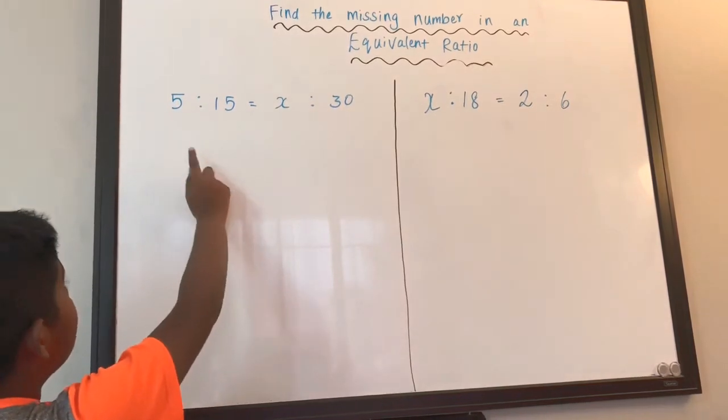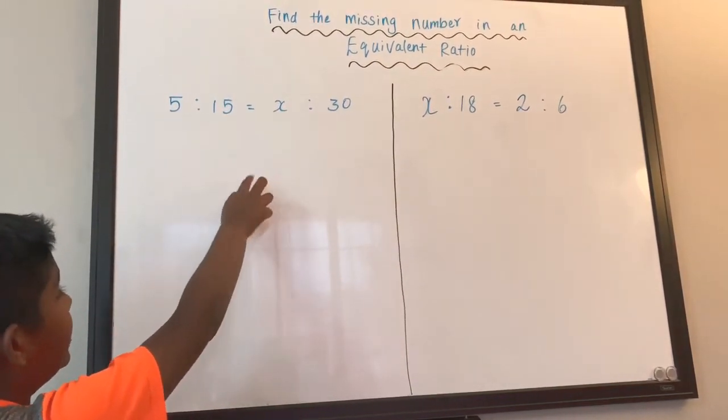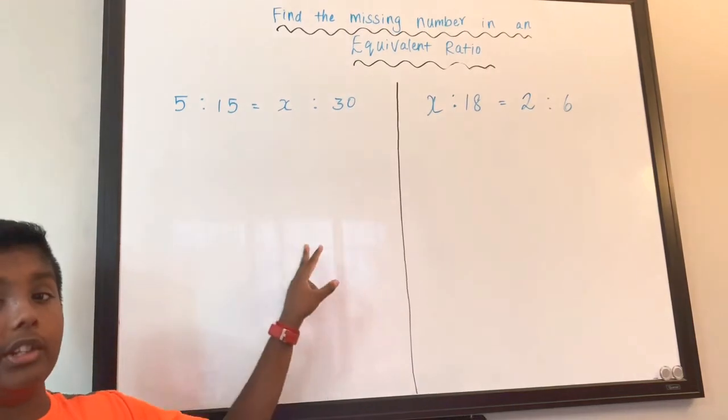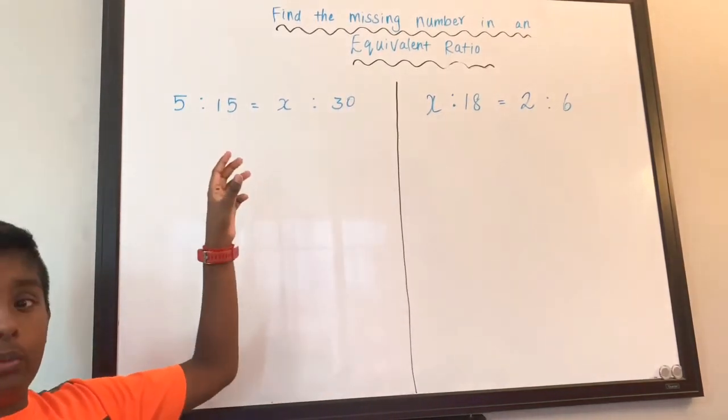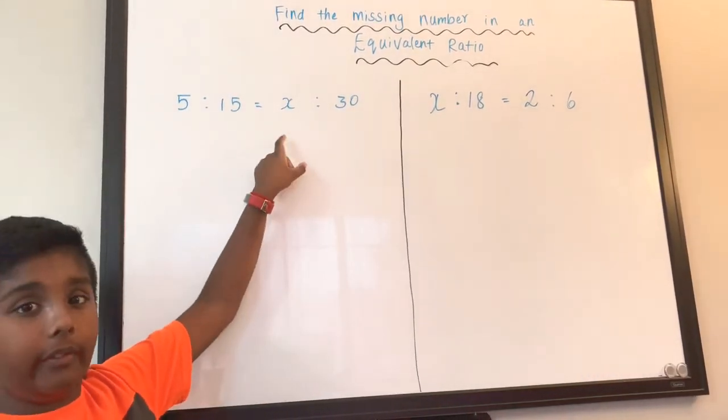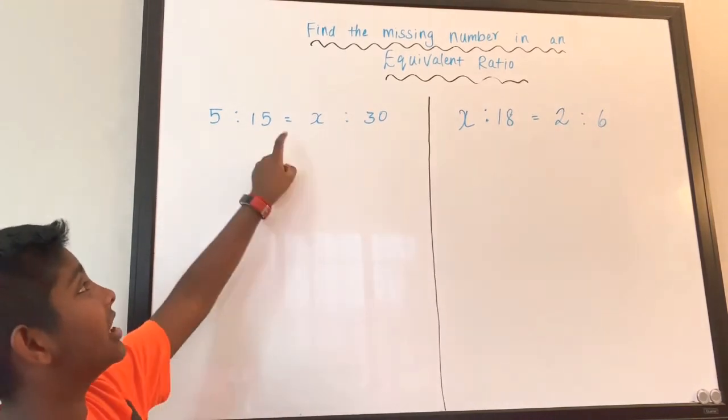5 is to 15 equals to X is to 30. So we have two ratios. We have to find out the X values. These are equivalent ratios because there's an equal sign here.